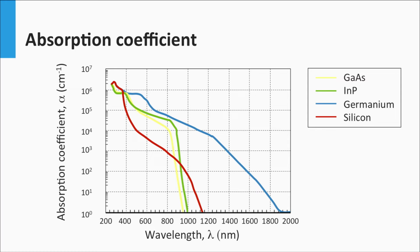Germanium, indicated by the blue line, is like silicon — it is an indirect band gap material. It has a band gap of 0.67 eV, which means it already starts to absorb light at wavelengths below 850 nm. In the visible part, germanium has some direct transitions as well.